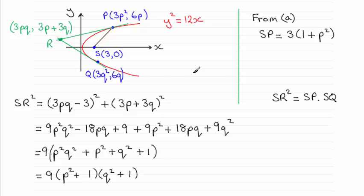That means that because of the similarity with Q and P, it must mean that SQ would be the same kind of result, only instead of P squared here it's going to be Q squared. So we've got SQ equals 3 times all of 1 plus Q squared.